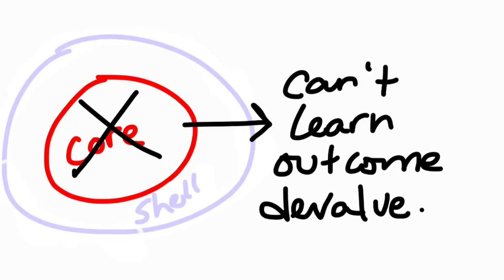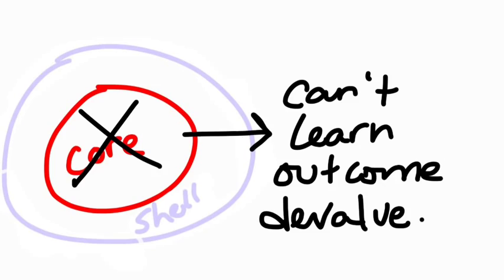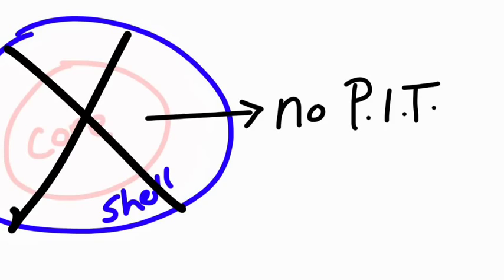However, if the core is lesioned, an animal can no longer learn about outcome devaluation. If you give a rat with core lesions sugar and lithium chloride, they will still press a lever to get it, even though it made them sick. On the other hand, if the shell is lesioned, specific transfer will not be observed.